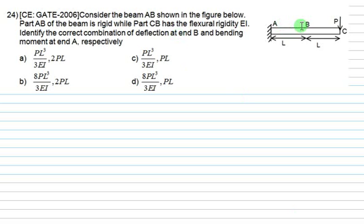In this case, we have beam AB. Part AB of the beam is rigid, and part CB has flexural rigidity equal to EI. Rigid means EI equals infinity. Identify the correct combination of deflection at end B and bending moment at end A. If it is rigid, will it bend or not? Will it remain horizontal for this portion? Bending will occur only for the last portion.